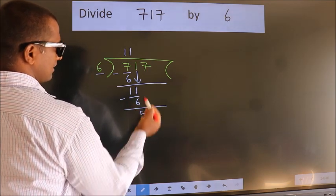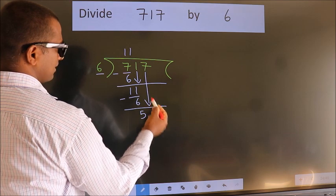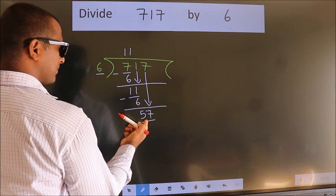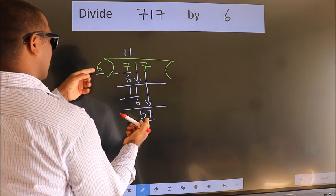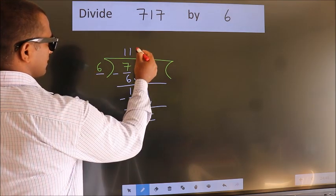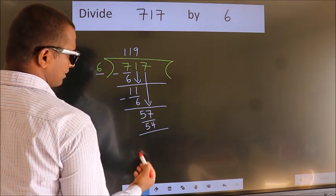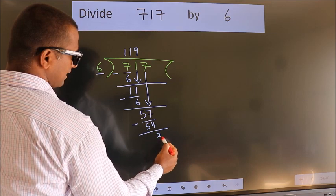After this, bring down the beside number. So 7 down. So 57. A number close to 57 in 6 table is 6 nines 54. Now we subtract. We get 3.